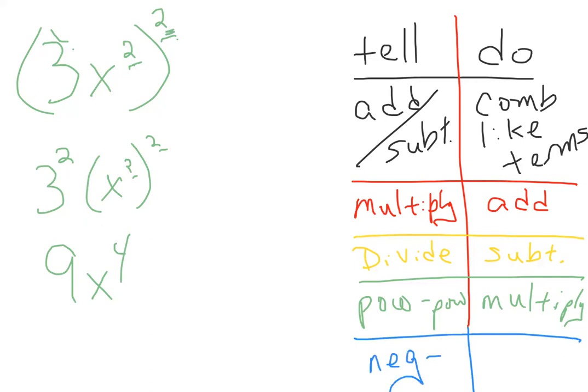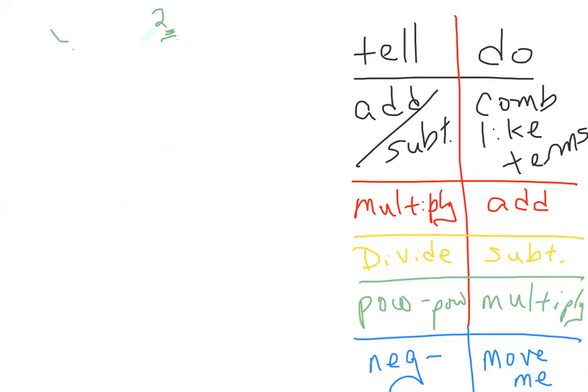What if they have a negative exponent? Well, it's screaming at you to move me. So what if you have something like this? Well, that negative seven says he's unhappy on top, he wants to go down, but x to the fourth, he's perfectly happy down there, so he's going to stay.